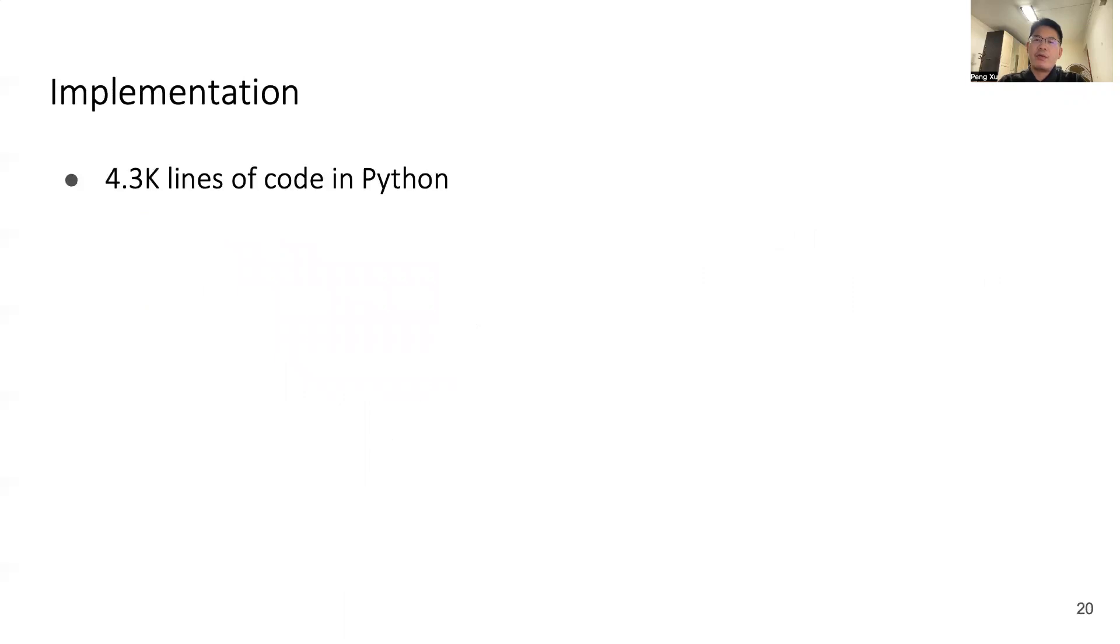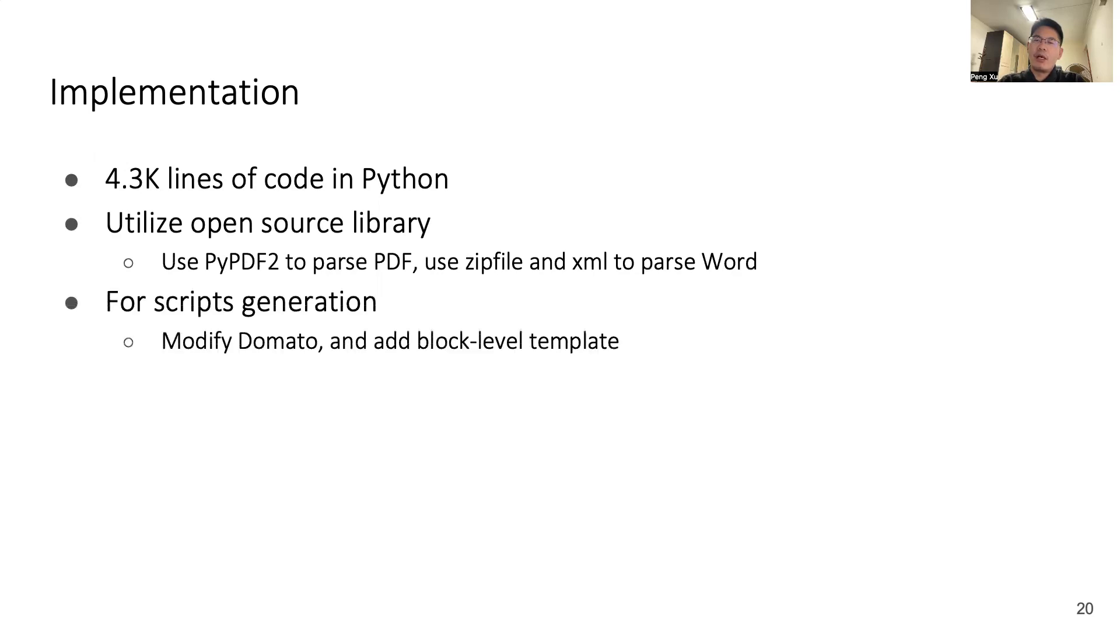For implementation, we developed Cooper in 4300 lines of Python code. Cooper has utilized some open source libraries. In particular, it uses the PDF2 Python library to parse the PDF format, uses zipfile and XML Python library to parse the Office format. For scripts generation, we utilize Domato and improve it with block level template. Cooper can currently support two formats: PDF and Office. It's notable that Cooper is extensible and portable. We can easily add some new features to Cooper and can also apply Cooper to other document formats with limited manual efforts.